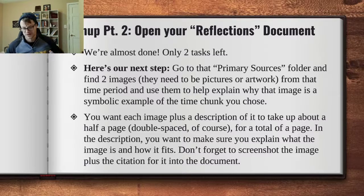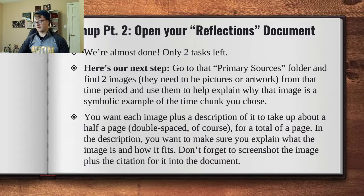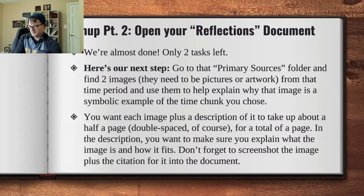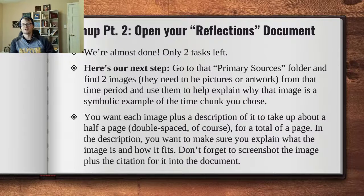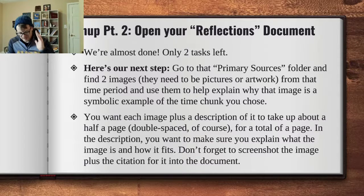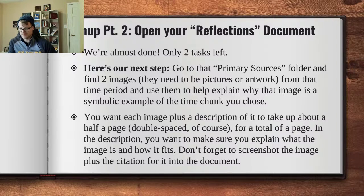We are almost done with our reflections document. We only have really a couple parts left. And one of those parts is we need images for our writing, technically. Now they use the word images in this critical thinking paper. I'm just going to call it primary sources because that's what they are. I want you to go to that primary sources folder in our Schoology thing, in plus stuff. And I want you to find two images in there — images would be like a picture, artwork, or something like that. It could be a map from that time period that you chose.